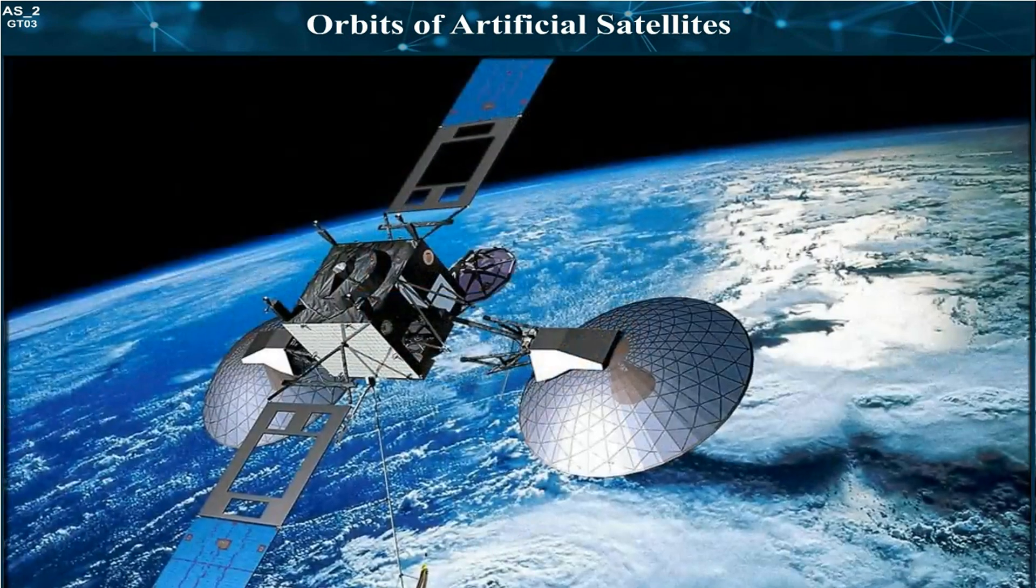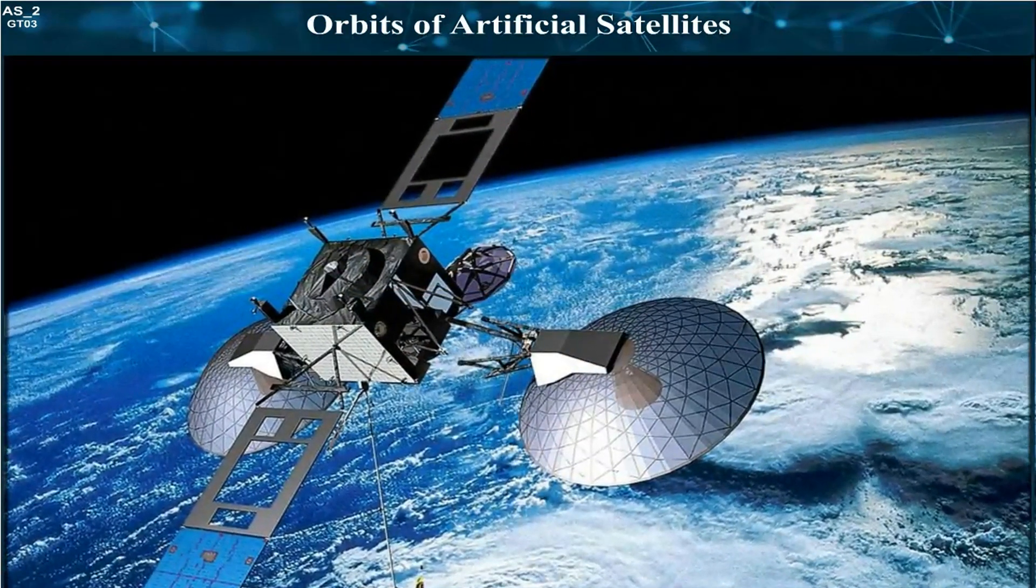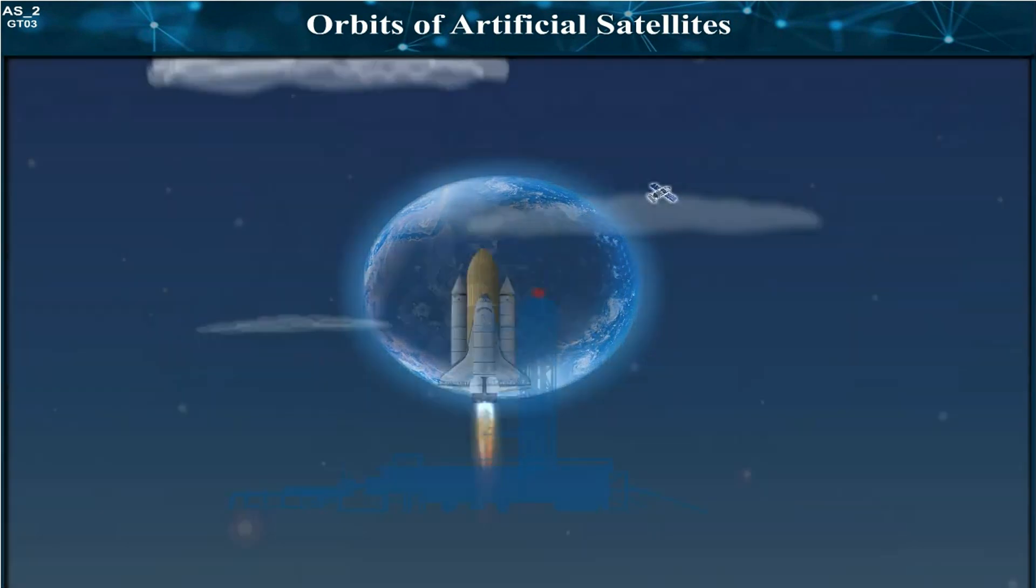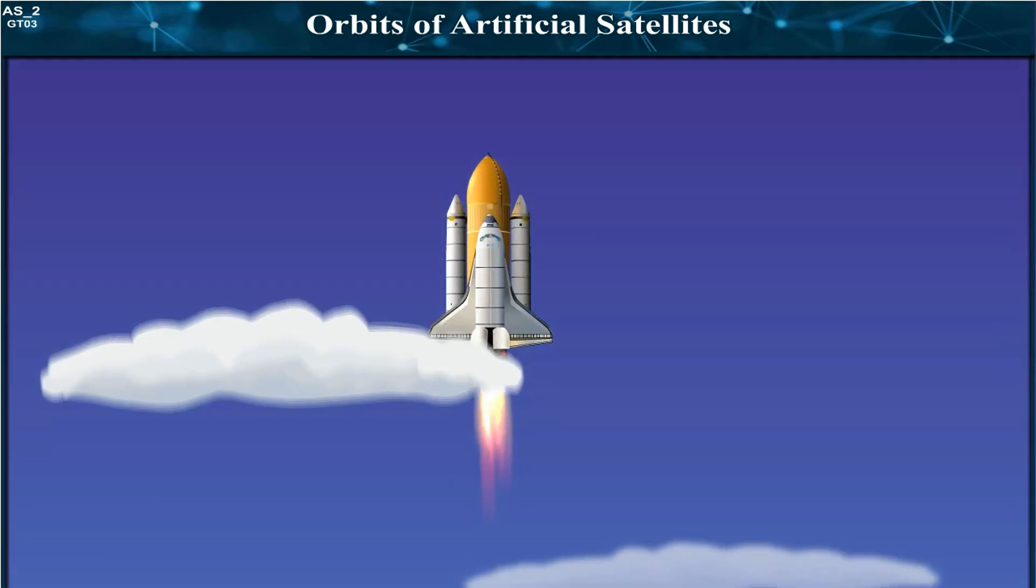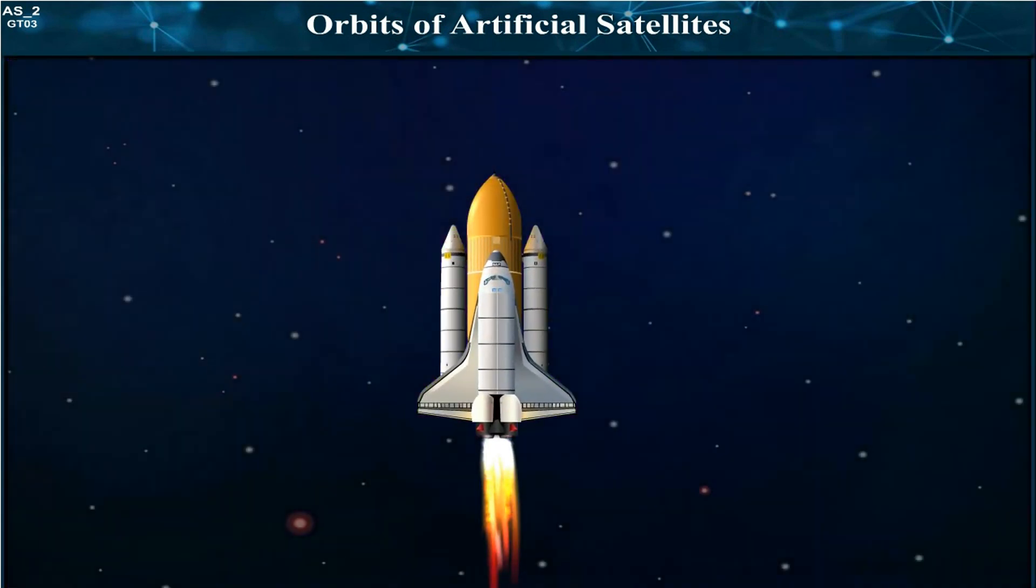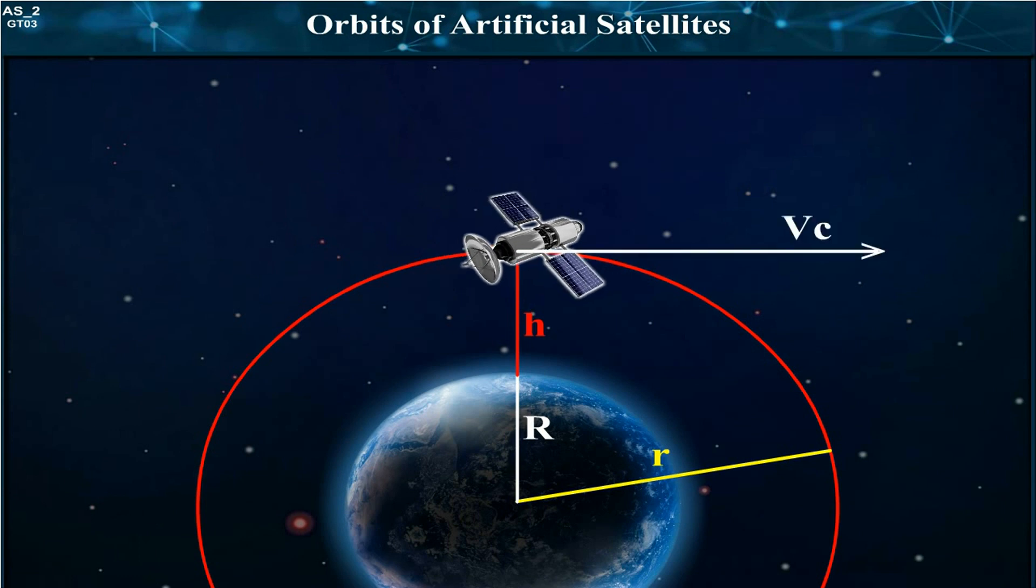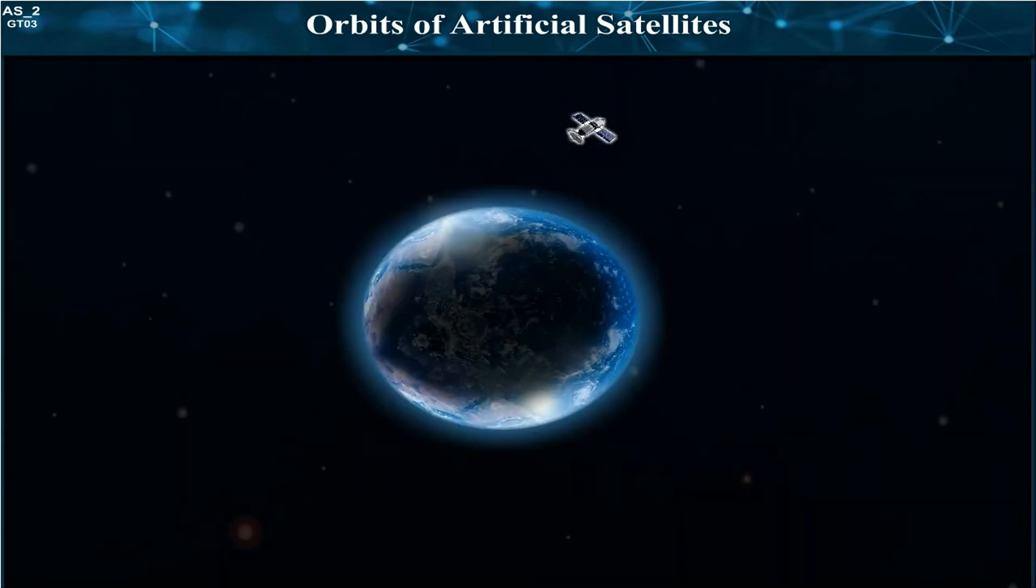To put the satellite in its proper orbit at specific height above the Earth's surface, the satellite is taken to that height using a satellite launcher. Then, the satellite is given a specific velocity known as the critical velocity in a tangential direction to the orbit. The satellite then starts revolving around the Earth.